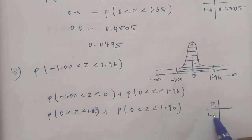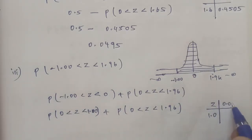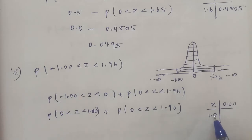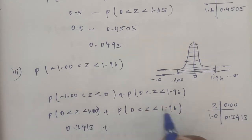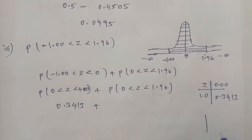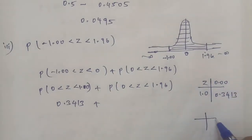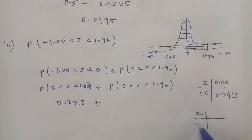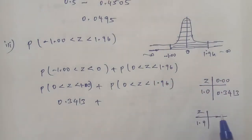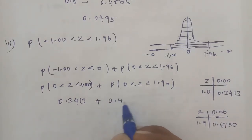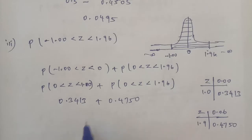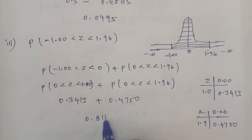From the table, for Z = 1.00 (row 1.0, column 0.00), the value is 0.3413. For Z = 1.96 (row 1.9, column 0.06), the value is 0.4750. Adding these: 0.3413 plus 0.4750 equals 0.8163. This is the answer for subdivision 3.